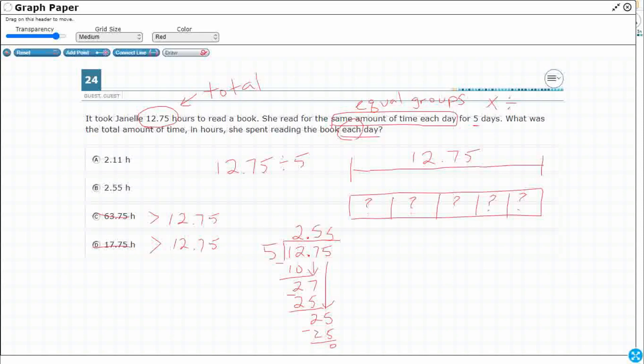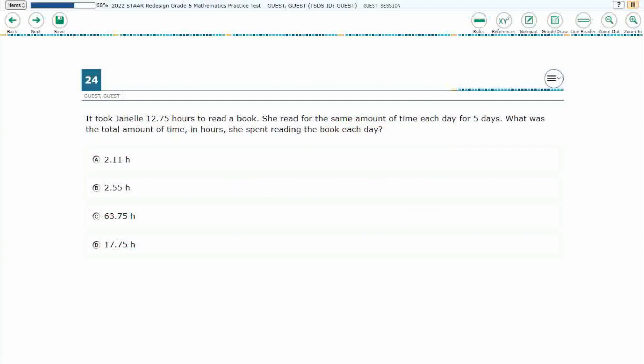Now the inverse operation is multiplication. So if you wanted to, you could take your 2 and 55 hundredths, multiply it by five, and you're going to get 25, 25, 27. That's 10. That's 12. Two digits behind the decimal. So let's get two digits behind the decimal. It goes back to your 12.75. So instead of the 2.11, let's get our correct answer of B, 2 and 55 hundredths hours.